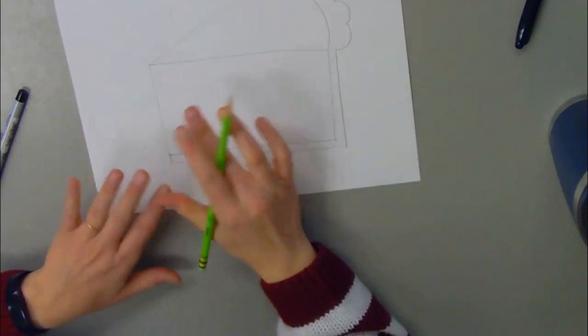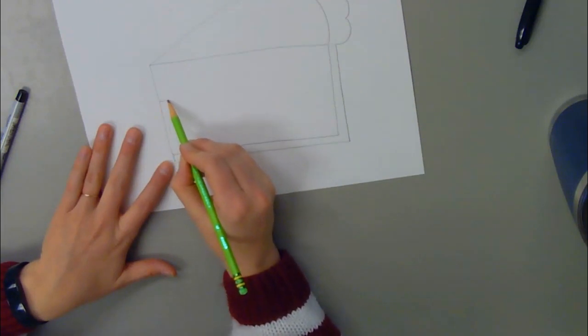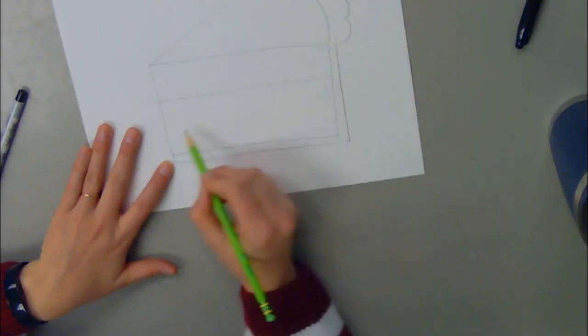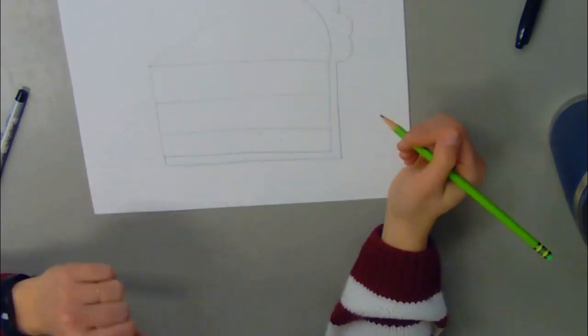Next on the inside of my pie here on the side, I'm going to add some layers. And you can add as many as you'd like. I'm just going to add two lines to create three different layers in there.